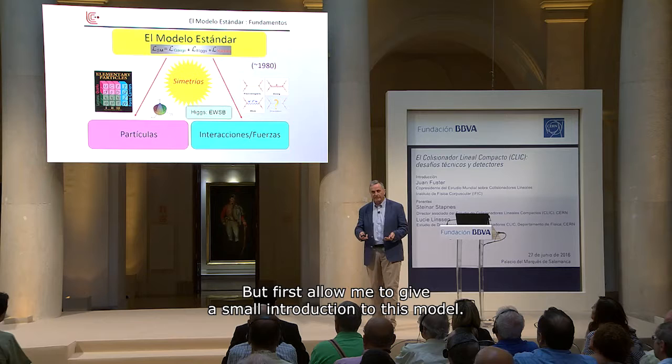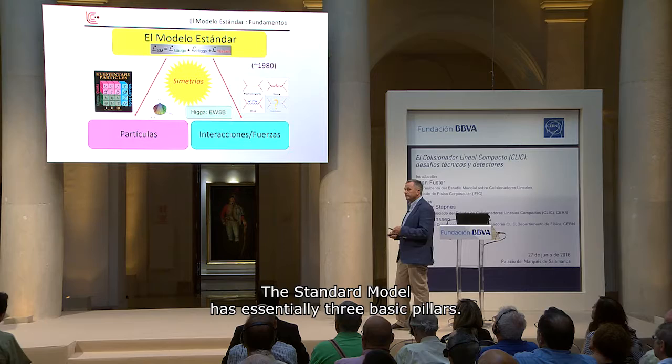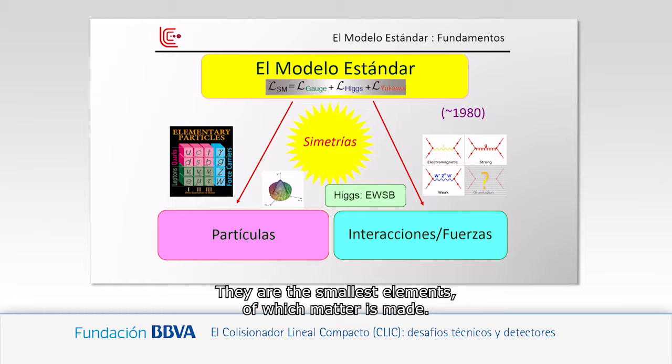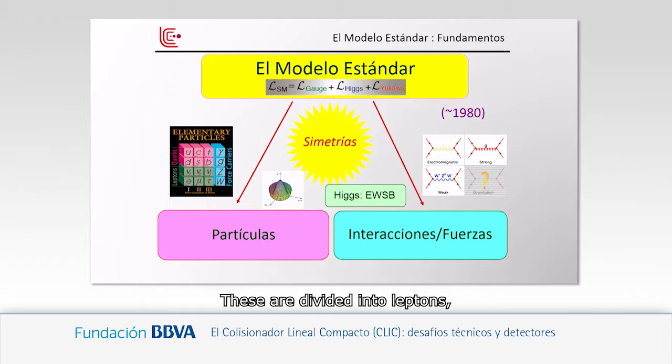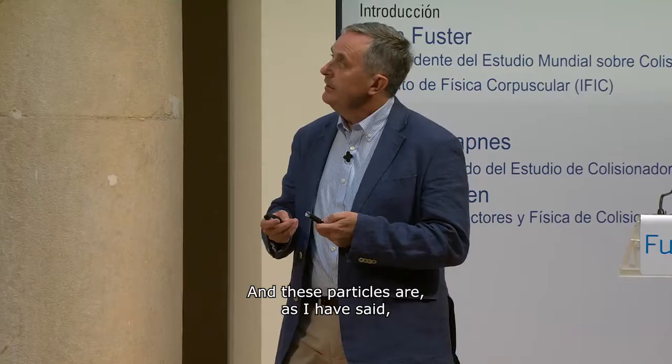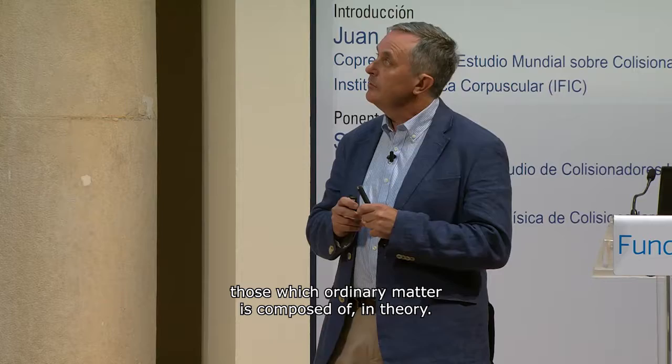The standard model has three basic pillars. The first is the pillar of particles — the constituents of matter, which are the smallest elements of which matter is composed. It is divided into leptons, like the electron, and quarks, like up and down. These particles are what compose ordinary material.